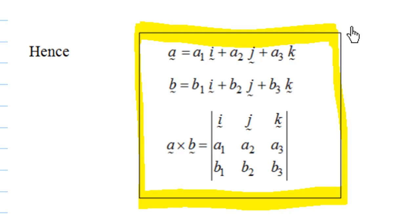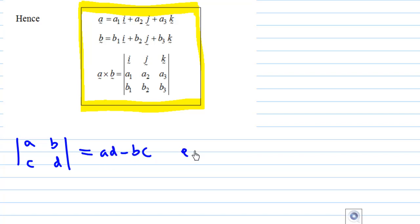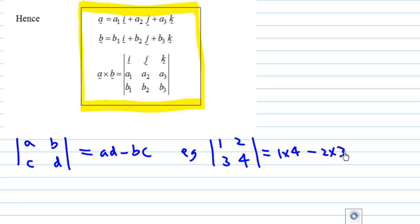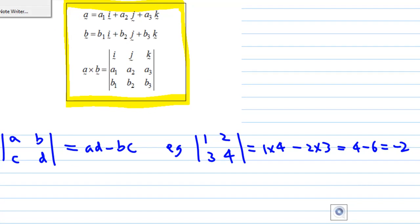Maybe you have forgotten how to find a determinant. For a 2 by 2 determinant with entries A, B, C, D, the determinant is AD minus BC. For example, the determinant of [1, 2; 3, 4] is 1 times 4 minus 2 times 3, which is 4 minus 6, equal to minus 2.